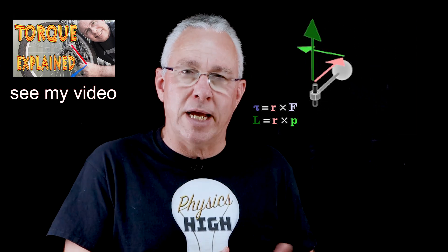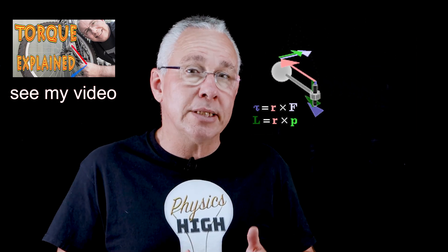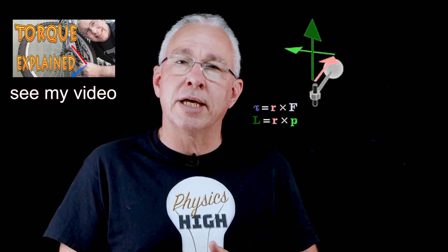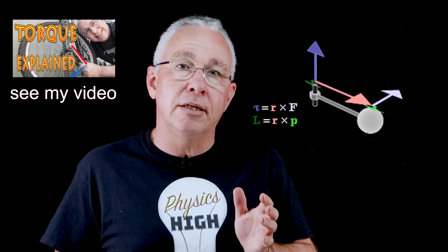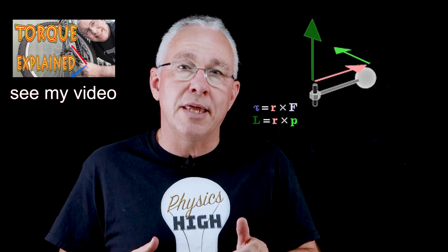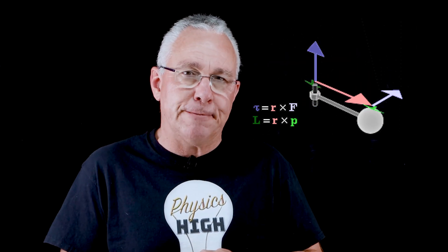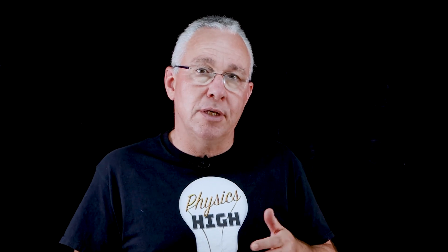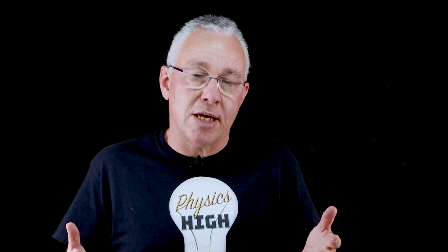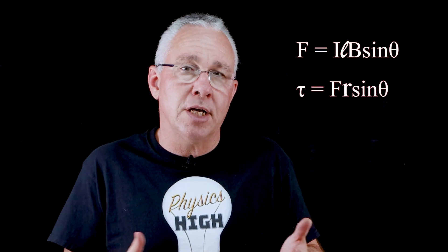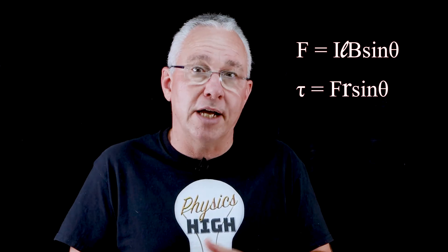Similarly, with torque we have a moment where a force is applied perpendicular to the radius, and the direction of the torque — found using the right-hand rule — gives us the vector direction perpendicular to the plane of both the radius and the force vectors. In high school we simply refer to the sine component: for the motor effect the formula is ILB sinθ, and for torque it is force times the radius multiplied by sinθ.